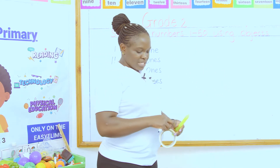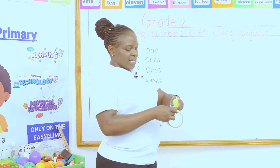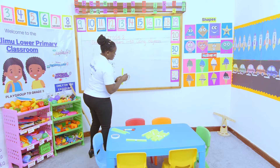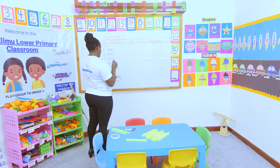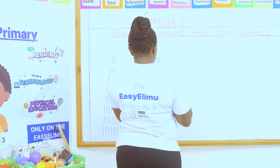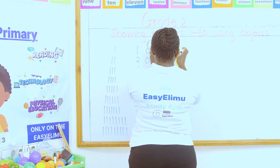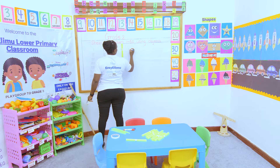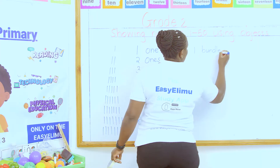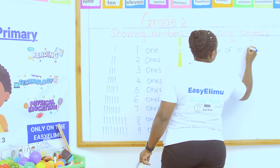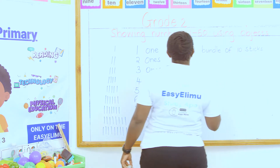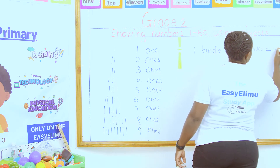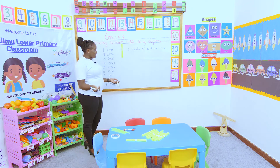A bundle of how many sticks? A bundle of ten sticks. This bundle of ten sticks makes what? One bundle of ten sticks — if I have one bundle of ten sticks, how many sticks are inside? I counted and there are ten. One bundle of ten sticks makes ten.